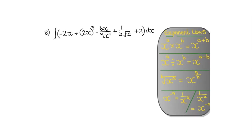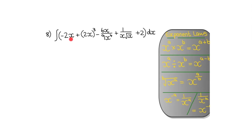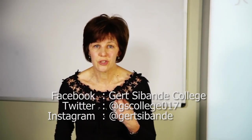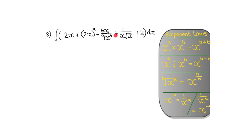Next problem: I have to integrate 5 terms. Before integrating, check that all terms are in the correct format. One term has a bracket that must be expanded — both values, the 2 as well as the x, must be raised to the power 3. Another term still needs simplifying: I need to apply exponent laws to get x in the numerator. I can't just start integrating — I have to get the format correct first.